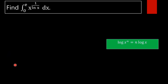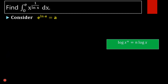To proceed, first consider the identity e raised to ln a equals a — that is, e raised to ln of any function is equal to that function itself.